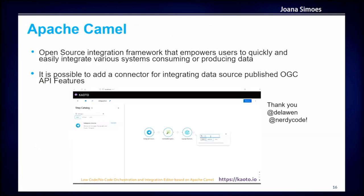Just recently, a component was added to Apache Camel — an open source framework from Apache — which allows users to integrate a data source published using OGC API Features. It's in pre-release right now but will be released soon.